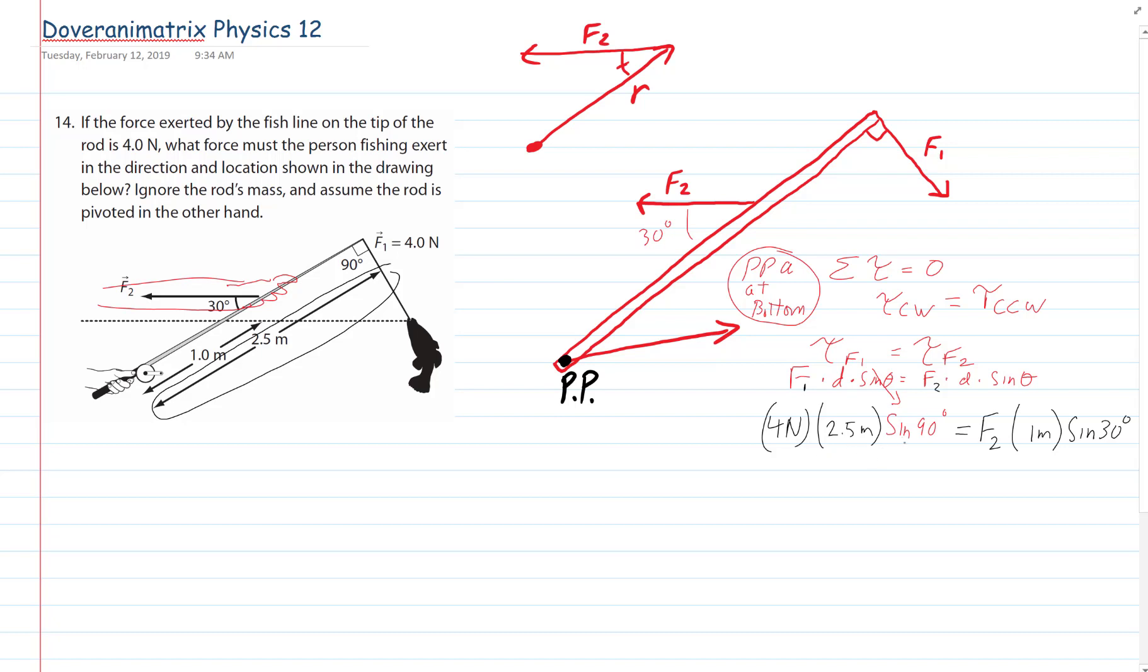So, 4 times 2.5 and sine of 90 is 1. That'll be 10 newton meters. And that has to equal F2 times the sine of 30, which is 1 half times 1.